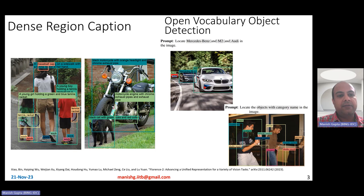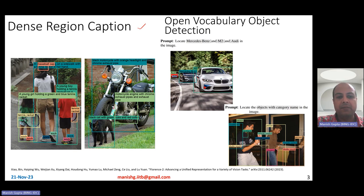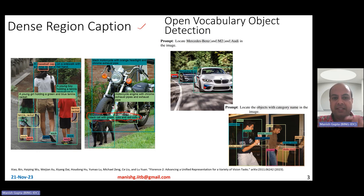The third task is dense region captions. Here you don't just have boxes recognized with simple labels like 'motorcycle' or 'cat' — it basically has much more detailed captions, like 'a black cat with green eyes and red collar.' So these are essentially object-level descriptions, but much, much more detailed descriptions.